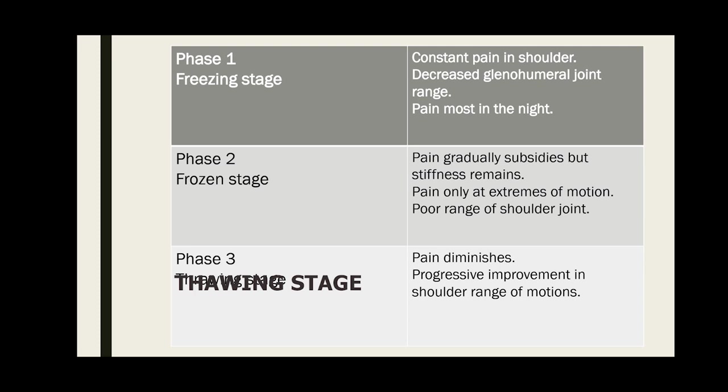The final stage, the thawing stage, shows increased glenohumeral motion and painless recovery of range of motion of the shoulder joint. The duration of all stages are: first stage 3 to 6 months, second stage 3 to 18 months, and third stage 3 to 6 months. Duration varies from person to person.